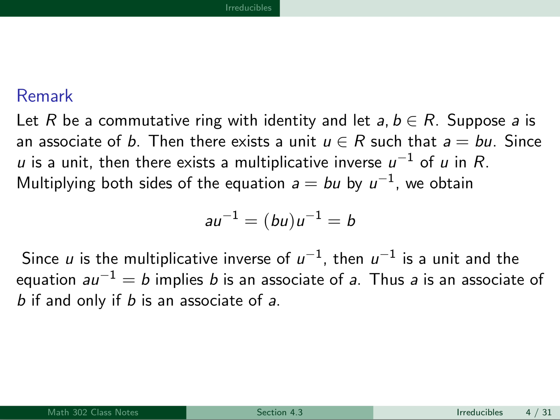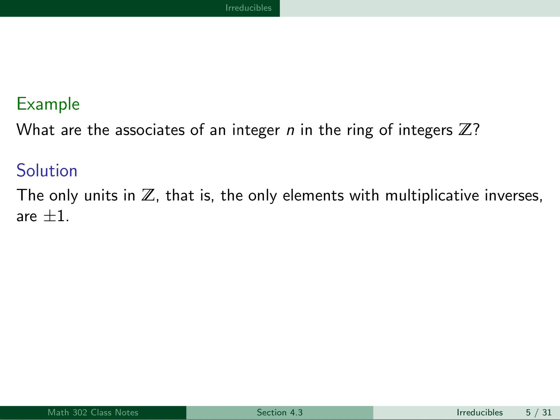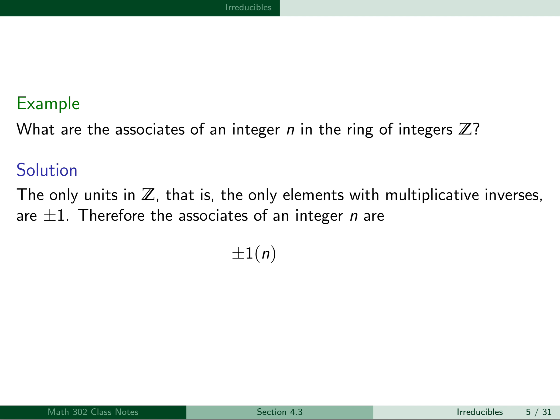Thus, a is an associate of b if and only if b is an associate of a. So the relationship of being an associate is symmetric. For our first example, what are the associates of an integer n in the ring of integers Z? The only units in Z are ±1. Therefore, the associates of an integer n are ±1 times n, which equals ±n. So each integer n, other than 0, has exactly two associates: itself and its negative.